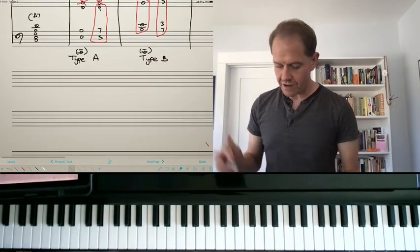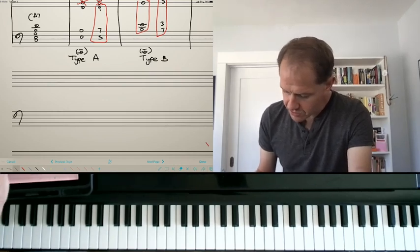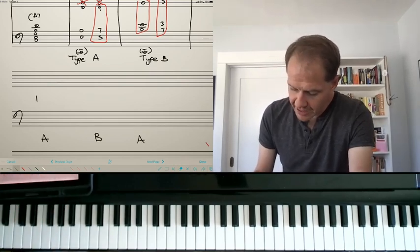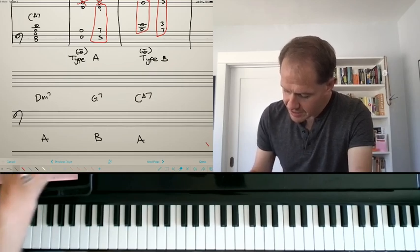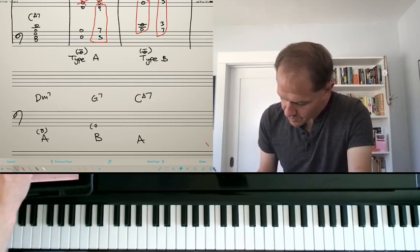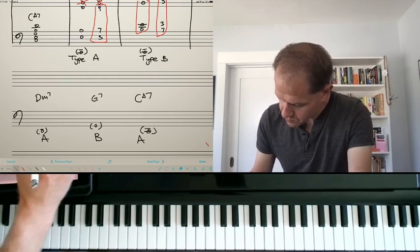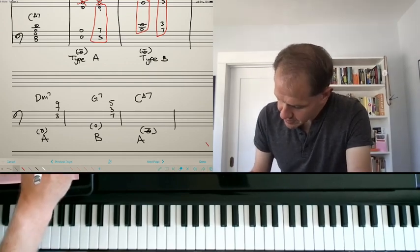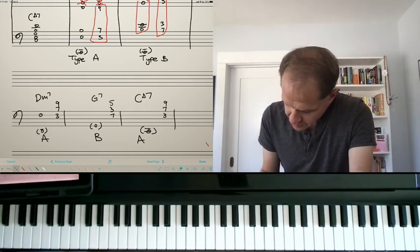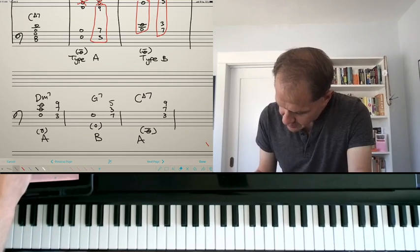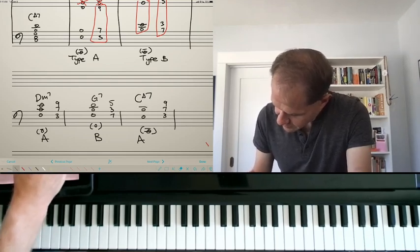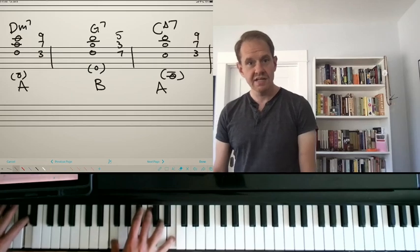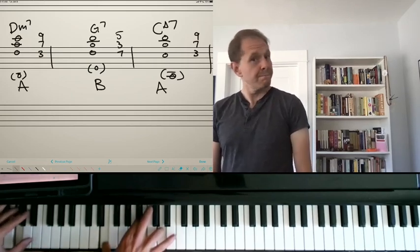And everything else remains the same. If we're going to have a 2-5-1, and here I'm just going to write this in the right hand, we'll still alternate between type A and type B. So if we have a 2-5-1 in the key of C, here's your root notes. We'd have 3-7-9, 7-3-5, and then back to 3-7-9. So it'll sound like this. I'll zoom in a little bit. I know it might be a little hard to see. Really lovely.